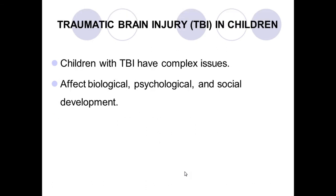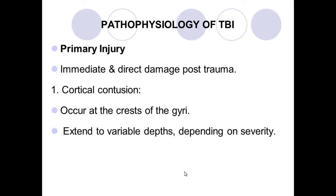Traumatic brain injury is a major cause of disability. Much work has been done since the Second World War, when many soldiers sustained penetrating gunshot and bullet injuries, prompting detailed research. TBI can produce focal neurological deficits similar to stroke, depending on the site of injury. Road traffic accidents and falls are other major causes of traumatic brain injury.